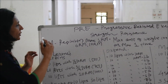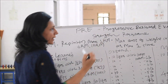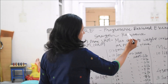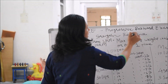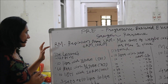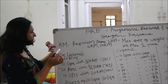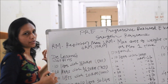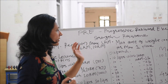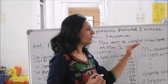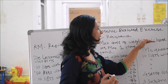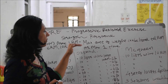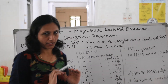So progressively you have to increase the amount of resistance if you want to increase the strength. The method by which we increase the resistance progressively is called progressive resistance exercise. First we need to know the terminology: what is RM, that is Repetition Maximum. One RM is defined as the maximum amount of weight which a person can lift in the full range of motion for a maximum of one repetition.